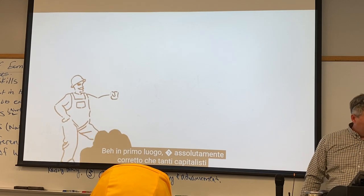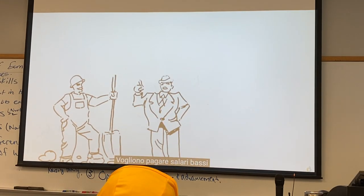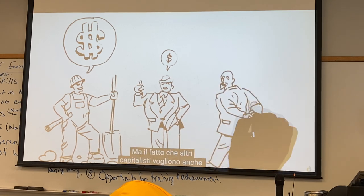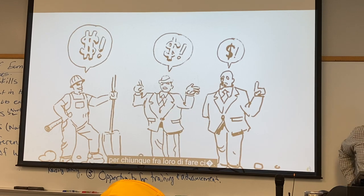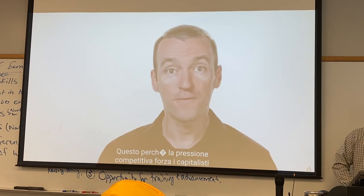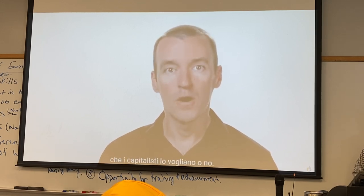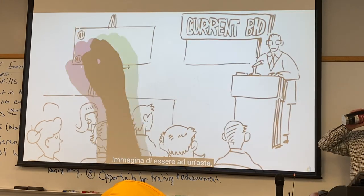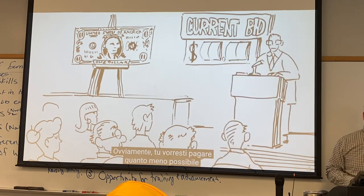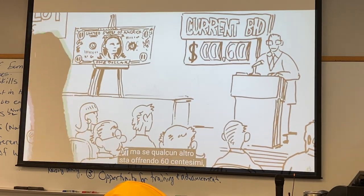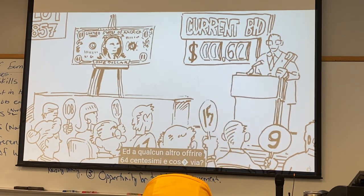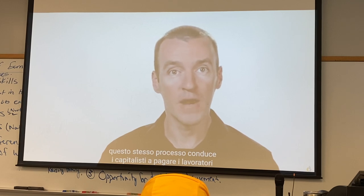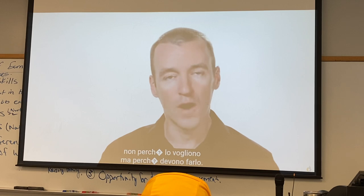The video argues that many capitalists want to exploit workers — to pay as low a wage as possible — but competitive pressure forces capitalists to pay workers close to the value of what those workers produce, whether they want to or not. If you try to pay someone less than their work is worth, someone else will offer them more. Like bidding for a dollar — you'd want to pay as little as possible, but competition drives the price up to close to a dollar.